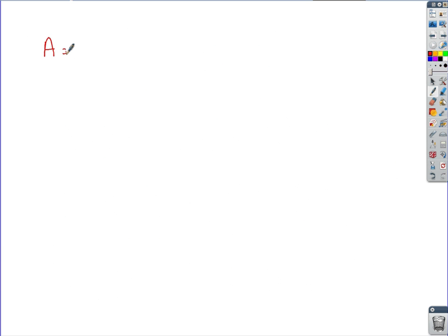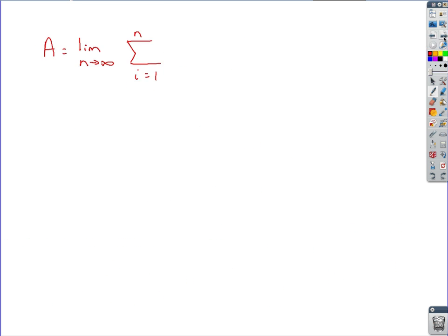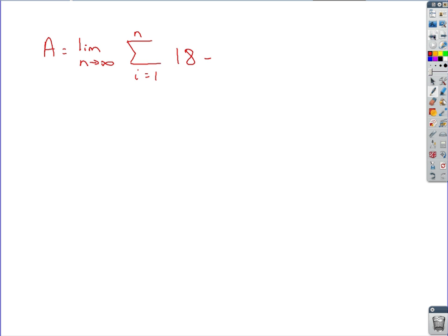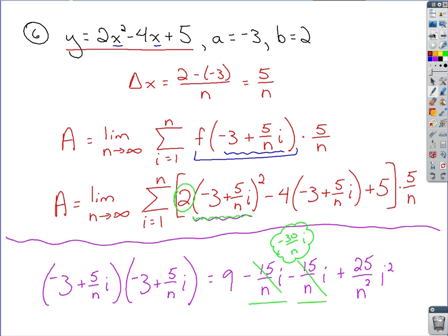Got the area. That equals the limit as n approaches infinity. Got our sigma notation in there. All right, we are distributing a 2 through to our scratch work. So we've got 18 minus, it's 2 times this 30 over n i, so minus 60 over n i. And we've got 2 times this guy here, so that's going to be 50 over n squared i squared. And was that plus? Yes.